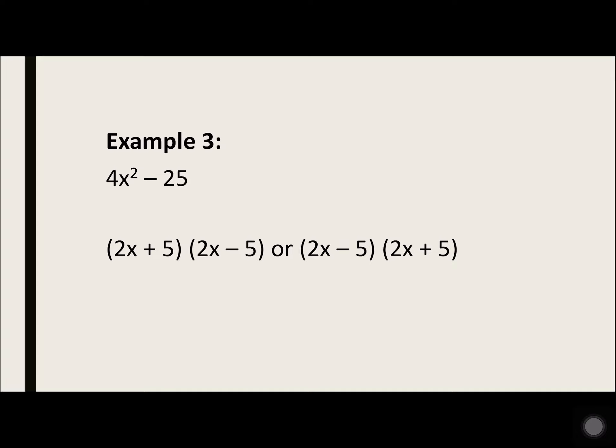Example 3: 4x squared minus 25. 4x squared is 2x times 2x, and 25 is 5 times 5. It's got to be something times itself, so you either have 2x plus 5 times 2x minus 5, or 2x minus 5 times 2x plus 5.